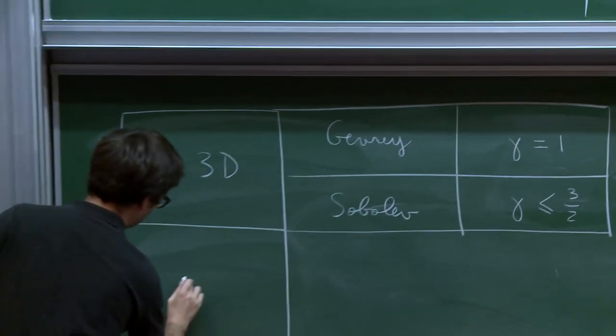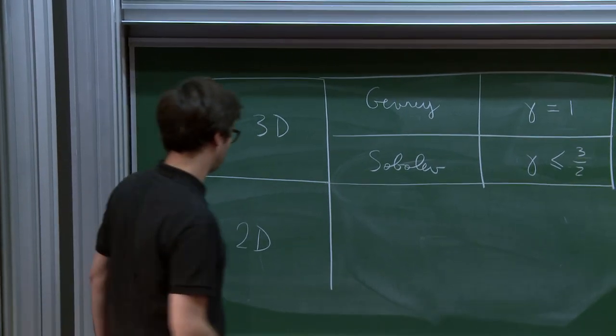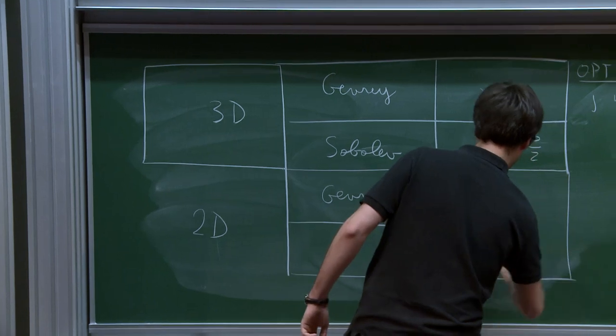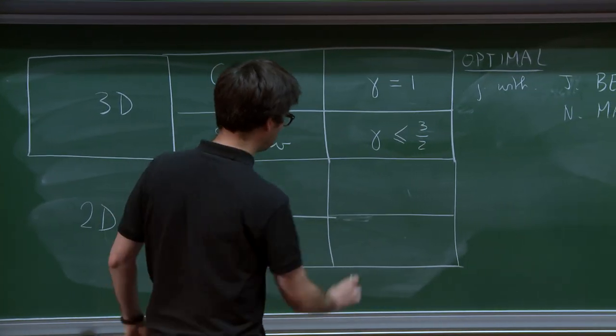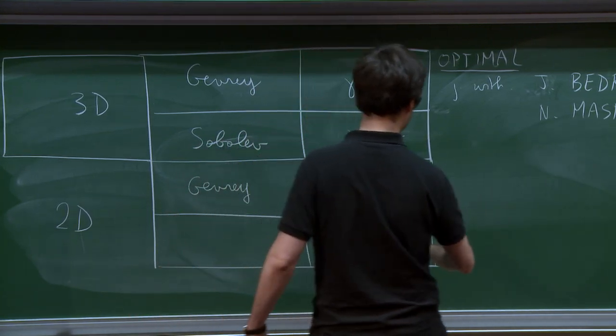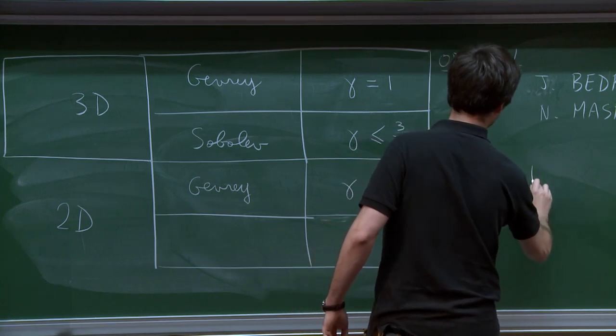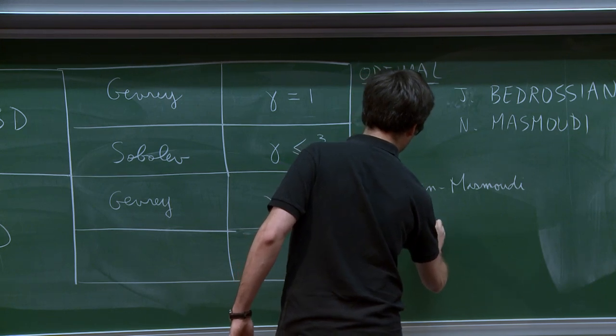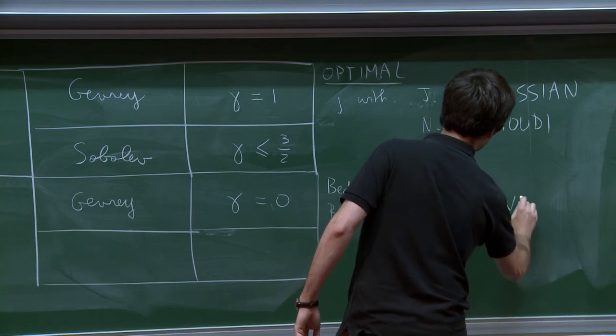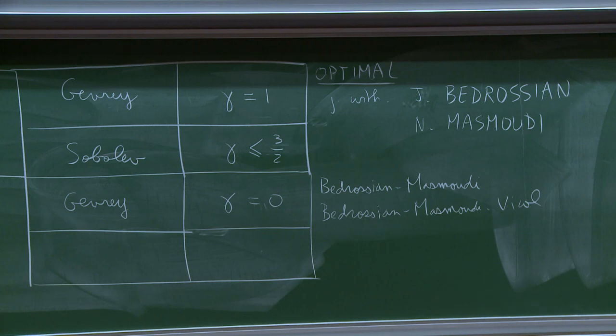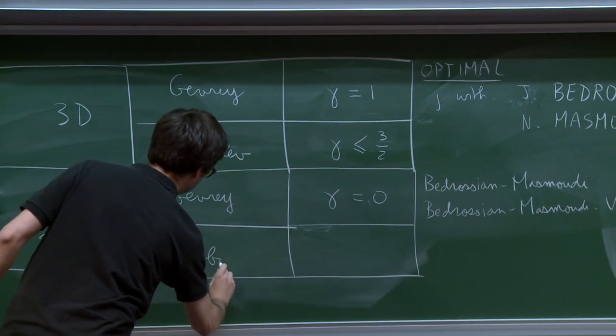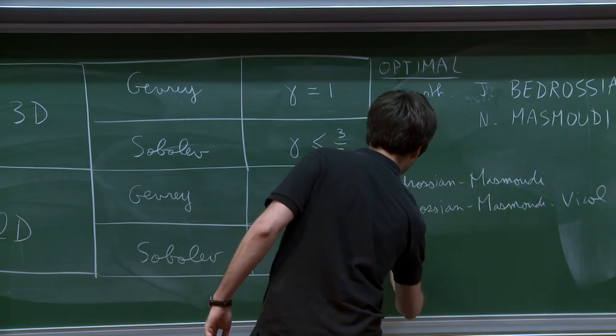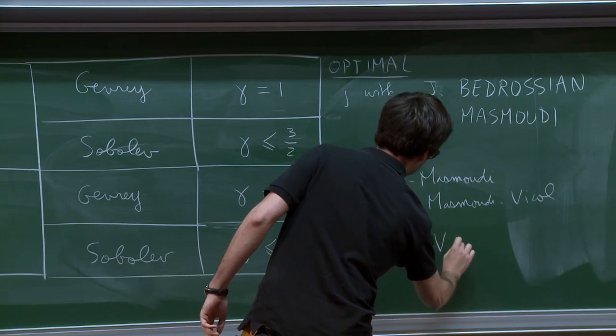But there is also results on the 2D case, so which really give a full picture. So in Gevrey topology, so this is where everything started. You find gamma equals 0. And this is due to Bedrossian and Masmoudi. So that's for the case nu equals 0. And then it was extended by Bedrossian, Masmoudi, and Vicol to the case of positive viscosity. And recently, the case of Sobolev in 2D has been treated. Here you find gamma less than or equal to 1 half. And this is due to Bedrossian, Vicol, and Wang.